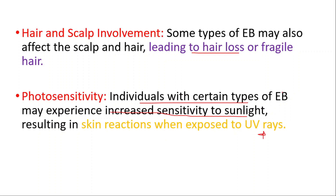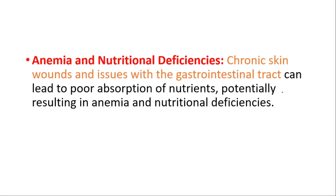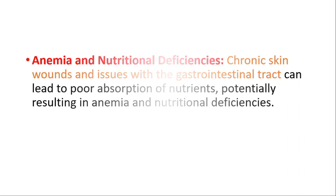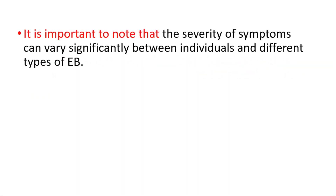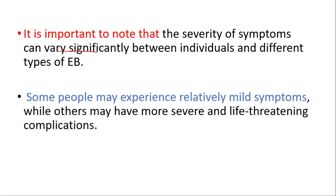Photosensitivity is also important — individuals with certain types may experience increased sensitivity to sunlight, resulting in skin reactions when exposed to UV light. Lastly, anemia and nutritional deficiencies can occur; chronic skin wounds and issues with the gastrointestinal tract can lead to poor absorption of nutrients, potentially resulting in anemia and nutritional deficiencies.